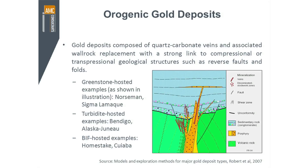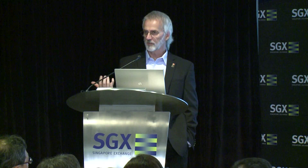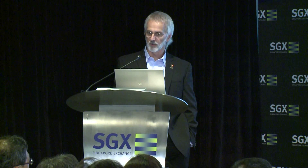In terms of the types of gold deposits, the first class is an orogenic gold deposit. There are some particular deposits in this category — Norseman, Bendigo, Alaska, Homestake. Some of those names might be familiar to you, but these are all very large, very major gold deposits around the world.